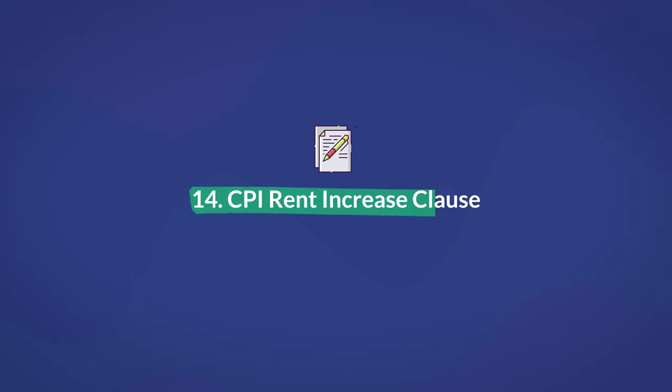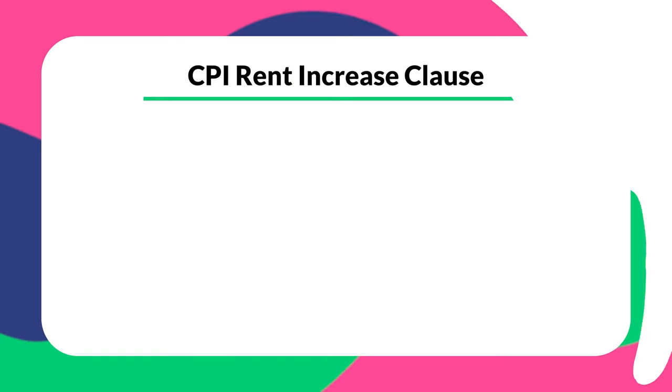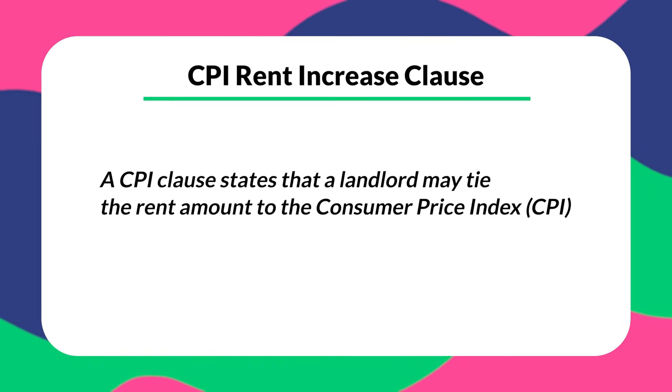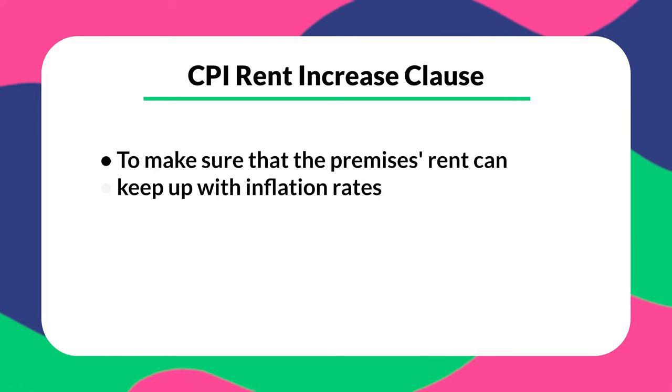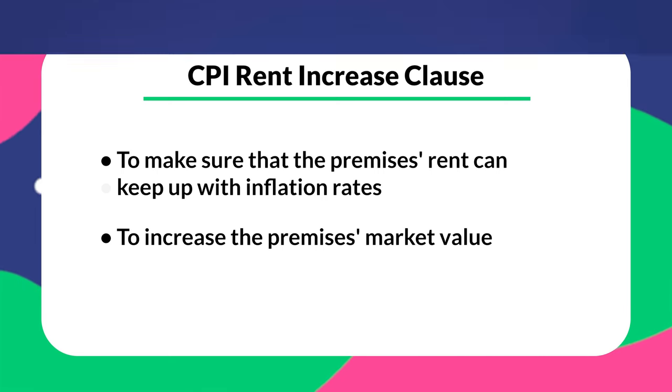Number fourteen is a CPI rent increase clause. A CPI rent increase clause may have to be included to protect both parties. It states that a landlord may tie the rent amount to the Consumer Price Index, known as the CPI. This means the rent may have to be escalated at the beginning of every lease year according to the percentage increases in the CPI over the last year. This is done for two main reasons: one, to make sure that the premises rent can keep up with inflation rates, and two, to increase the premises market value.